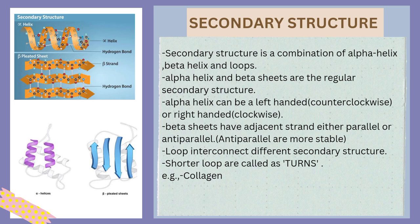Secondary structures are formed by the combination of alpha helices, beta sheets, and loops. Alpha helices and beta sheets are regular secondary structures, while loops are non-regular. They are bonded to each other by hydrogen bonds. Alpha helices have a helical conformation and can be left-handed or right-handed depending on the direction of rotation. Right-handed helices are more favorable because there is less steric clash between the side chains and the backbone.